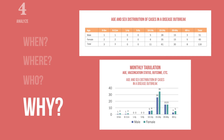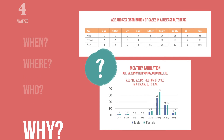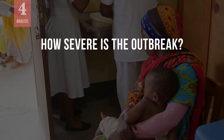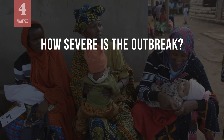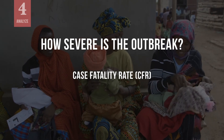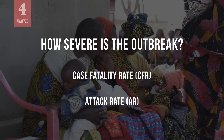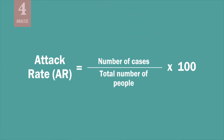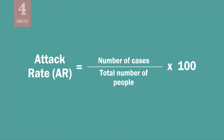Carefully analyze this information to develop hypotheses about the source and spread of the disease. Another important question to ask during analysis is: how severe is the outbreak? Two ways to measure the severity of an outbreak are the case fatality rate, or CFR, and the attack rate, or AR. The CFR measures the proportion of deaths among cases and is an indicator of the severity of the outbreak. The AR expresses the risk of disease in the population in a given area since the beginning of the outbreak.